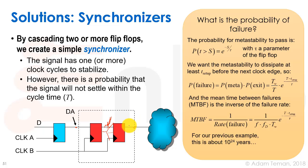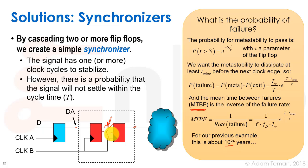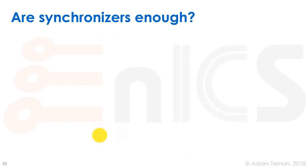We describe this using mean time between failures, or MTBF — a parameter indicating how much metastability probability we're willing to tolerate, which tells us whether we need to add a third flip-flop or more to the synchronizer. MTBF is one divided by the failure rate, and in this case it comes out to about 10^24 years — a very long mean time between failures, so a two flip-flop synchronizer is usually sufficient.